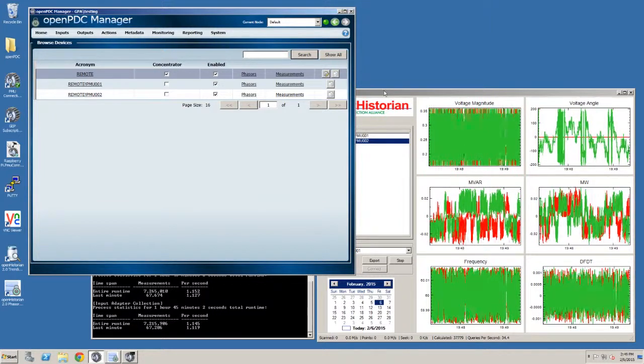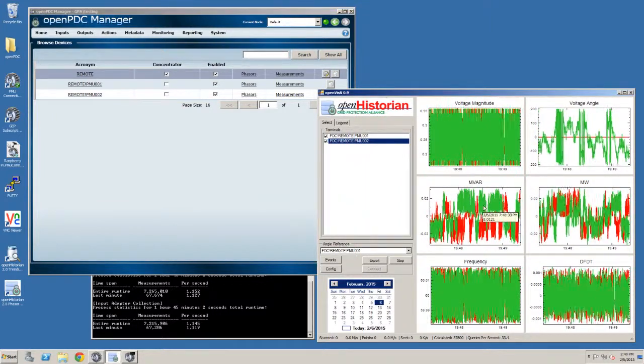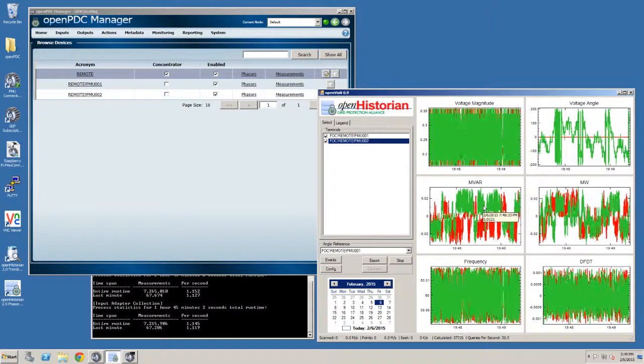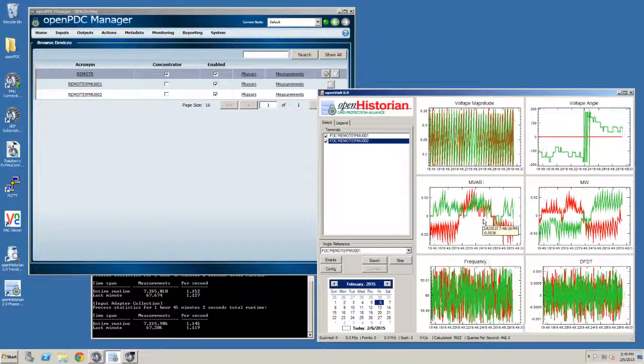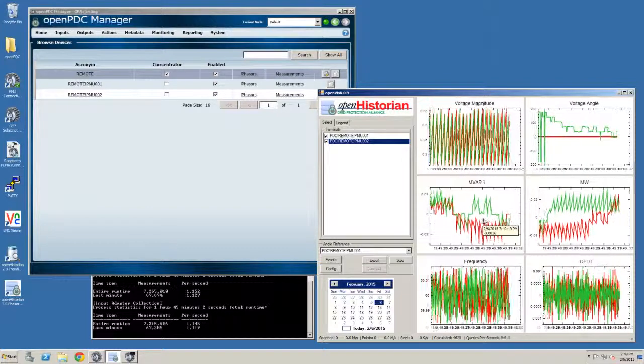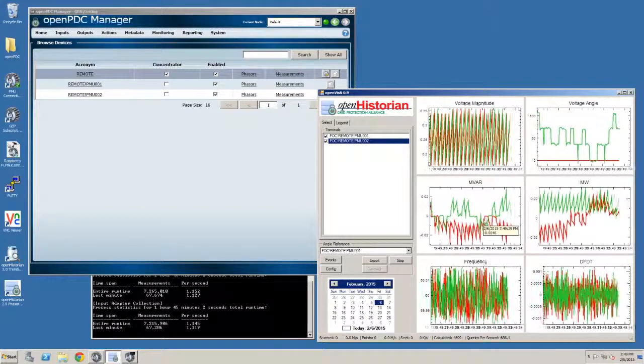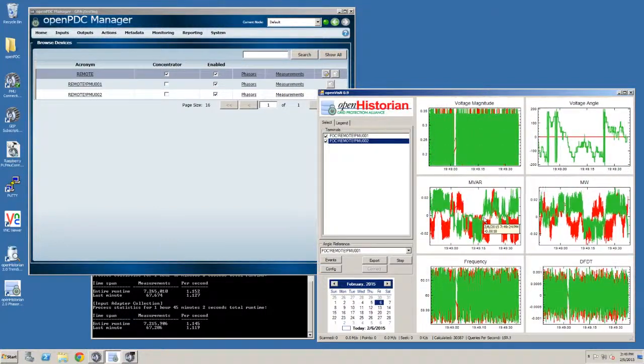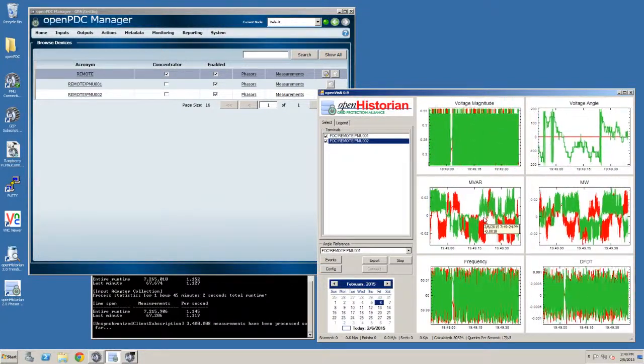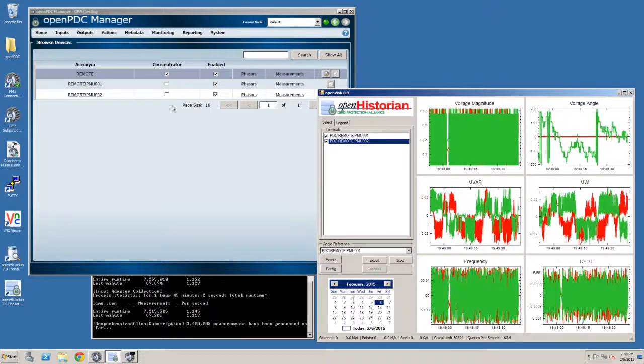Also on the screen, you can see I have the Open Historian running. This is a phaser visualization tool. And it's actually querying data from the historian. So the stream of data you're seeing right now is based on queries right from the disk. So I'm zoomed out a little bit so we can actually show you the Data Gap Recovery feature sort of real time.